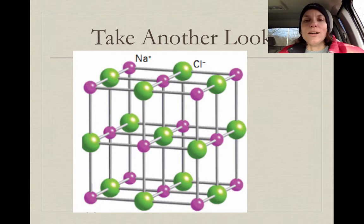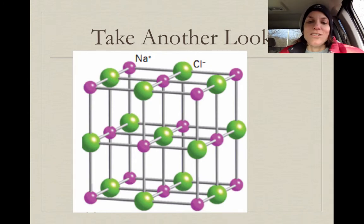And you notice that they're alternating, positive to negative, positive to negative. So every positive ion is surrounded by negative ions, and every negative ion is surrounded by positive ions. So it's a very stable three-dimensional structure.